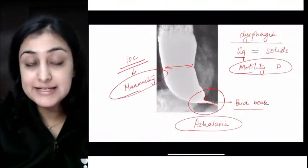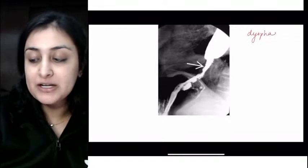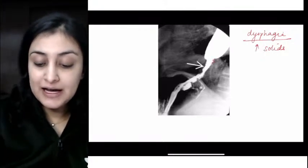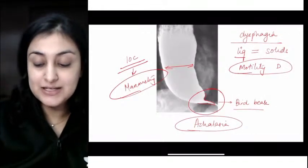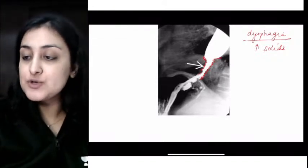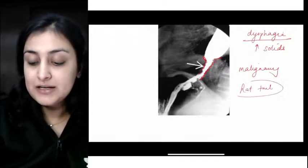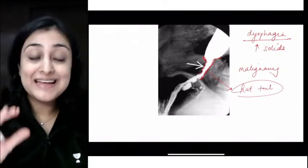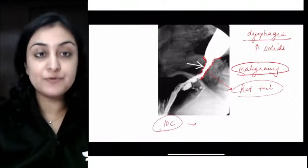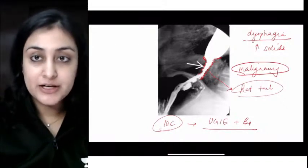On the other hand, dysphagia but now mechanical dysphagia, more for solids than liquids, older patient. The distal esophagus is very irregular - compare it with the smooth bird beak. This is very irregular with proximal shouldering. This is rat tail appearance, suggestive of CA esophagus - nobody likes rats, very malignant. This is irregular with shouldering. The best investigation to make a diagnosis will always be biopsy, so upper GI endoscopy with biopsy is the investigation of choice.